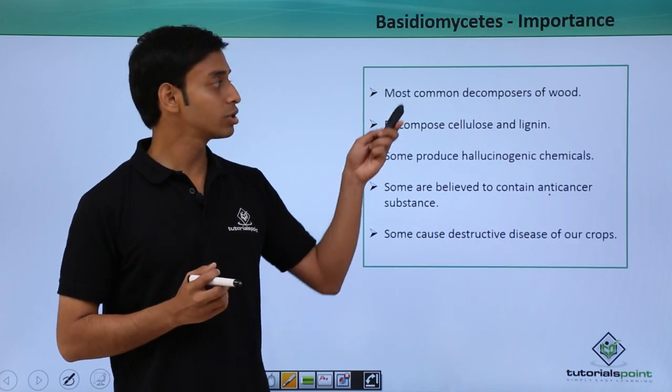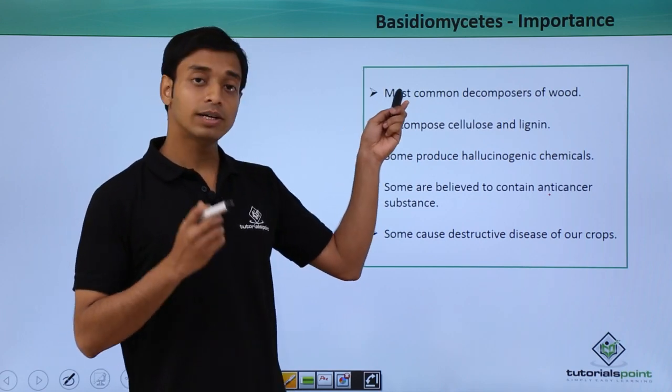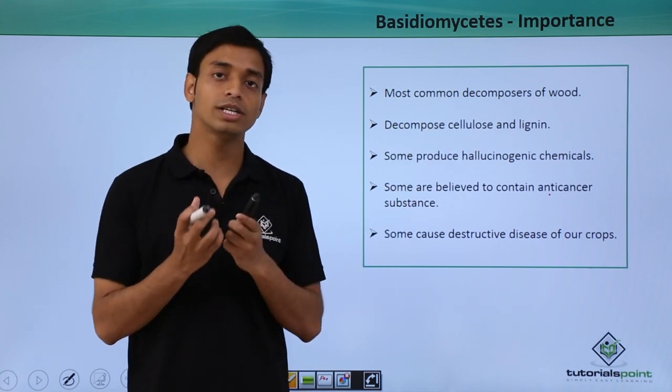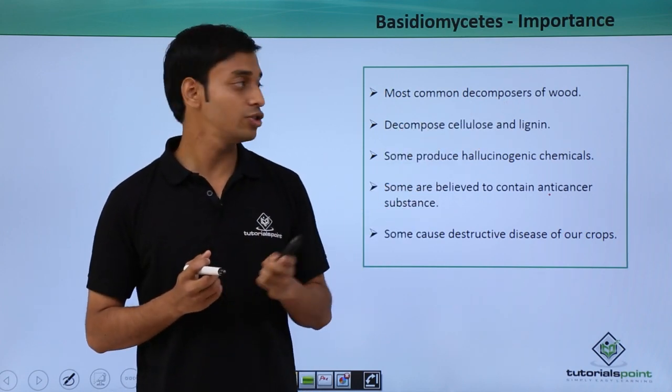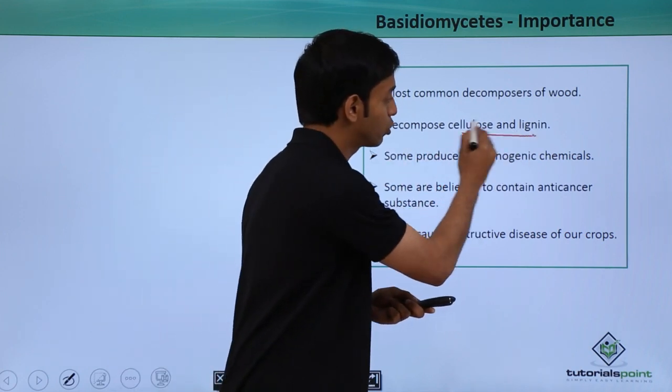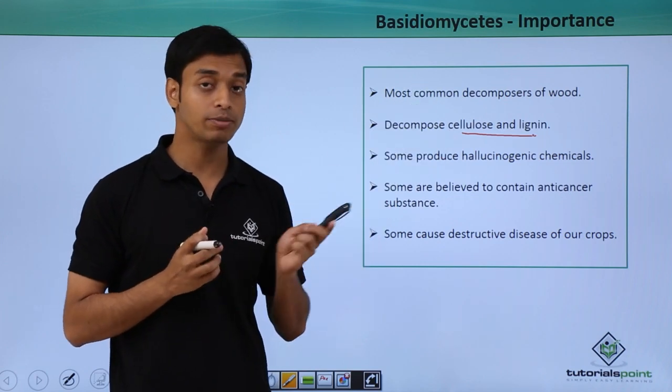Now let us talk about some of the importance of Basidiomycetes. They are one of the most common decomposers of wood. They can decompose cellulose as well as lignin.